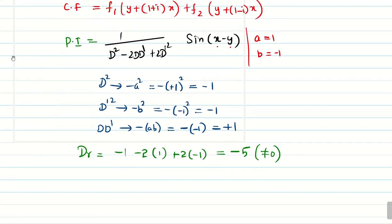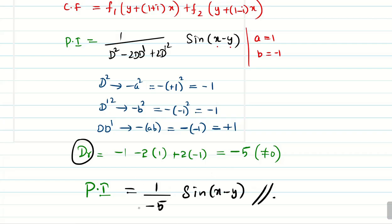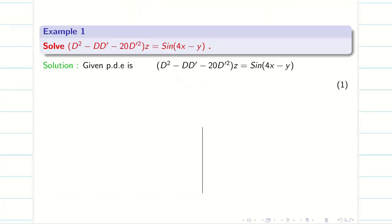Since the denominator is non-zero, I can write PI = (1/-5)·sin(x - y). Then the general solution is z = CF + PI. You can write out the CF and PI and the answer is complete.